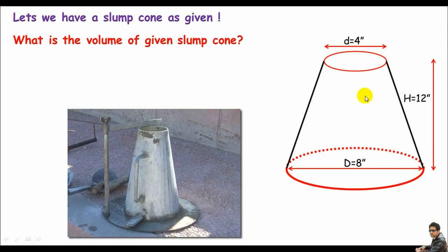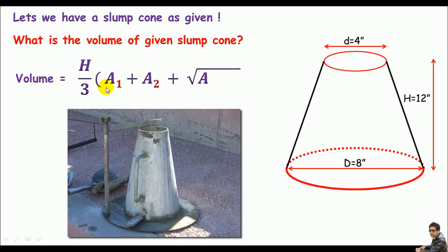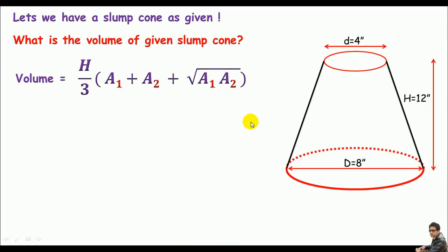Remember the slumped cone is a frustum of a cone, so we can use the same formula h by 3 times a1 plus a2 plus square root of a1 and a2. Here h represents the cone height, a1 is the top area, a2 is the bottom area.